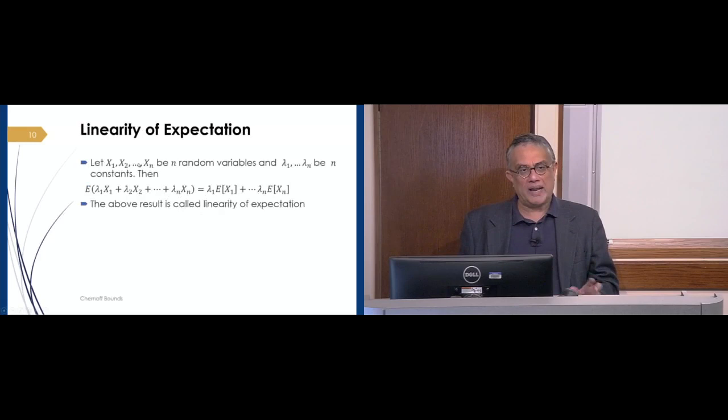A simple, well-known fact that we will be using, so I'll just mention it in passing. If lambda 1 through lambda n are constants, they're not random variables, they're just constant numbers, then it's well-known that the expectation of lambda 1 times X1 plus lambda 2 times X2 plus, plus, plus, et cetera, lambda n times Xn is simply lambda 1 times expectation of X1 plus the sum, et cetera, lambda n times expectation of Xn. It's called the linearity of expectations. It's a very basic observation about expectations and probability.